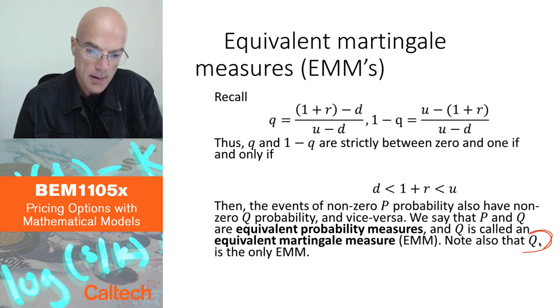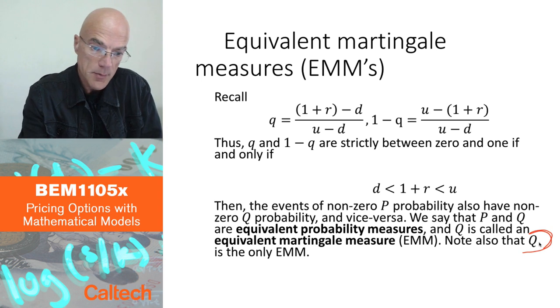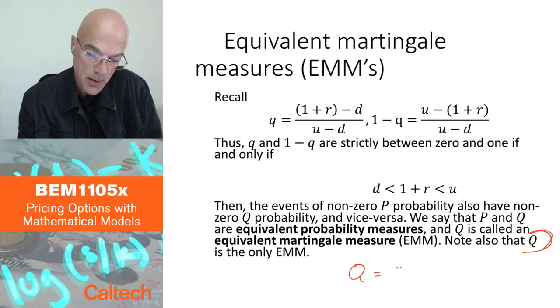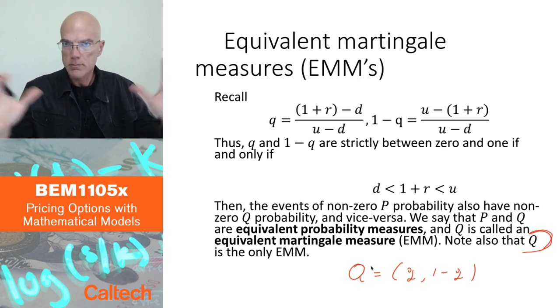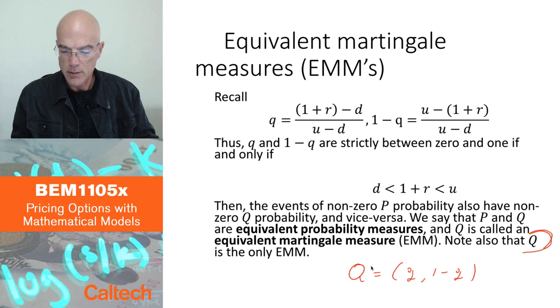So uppercase Q is just kind of a notation for the overall global probability, overall possible events and outcomes. So in the binomial model, uppercase Q would simply be the pair q and 1 minus q. But if I have more than two possibilities, then there would be q1, q2, q3, and so on. So uppercase Q is just a notation for the whole, for all the probabilities involved.